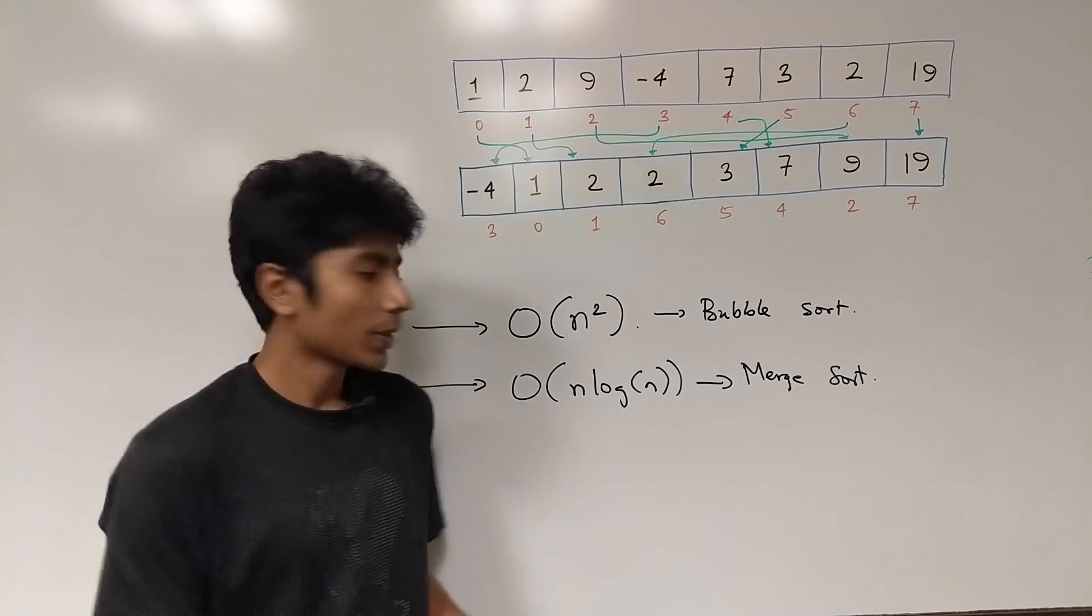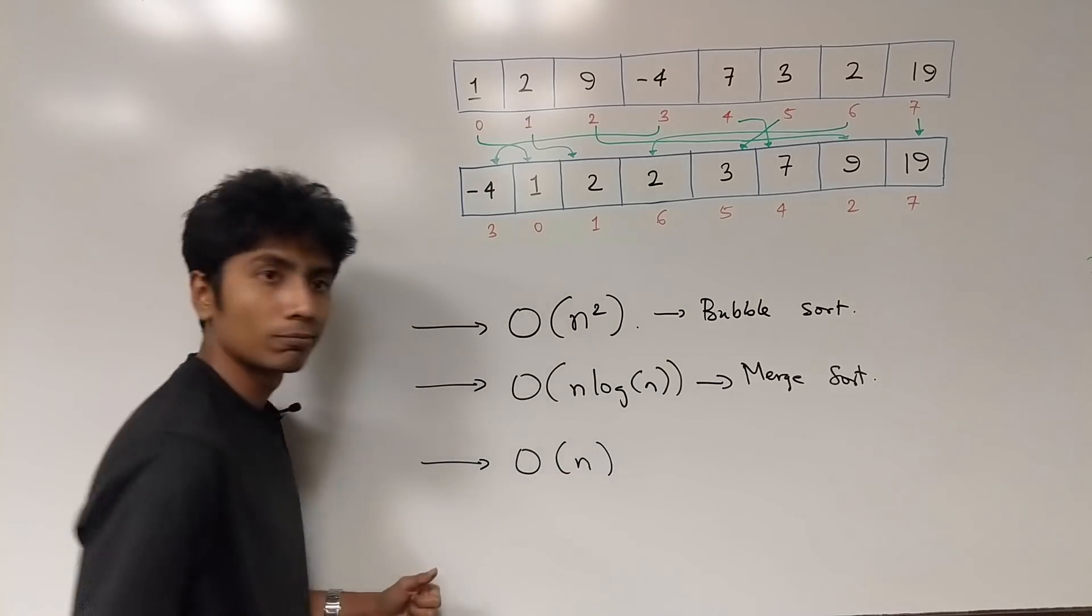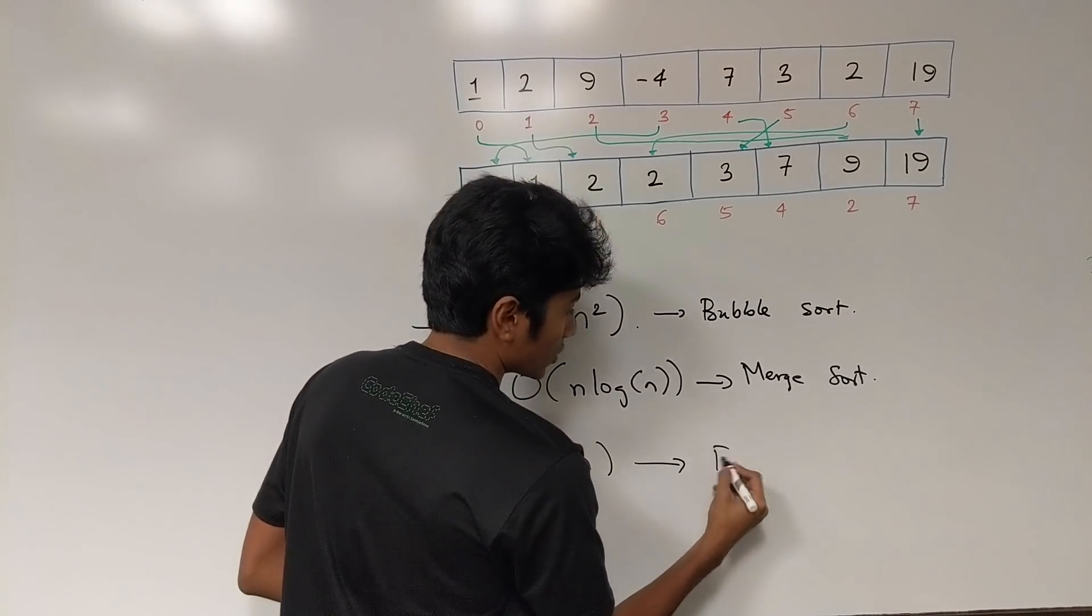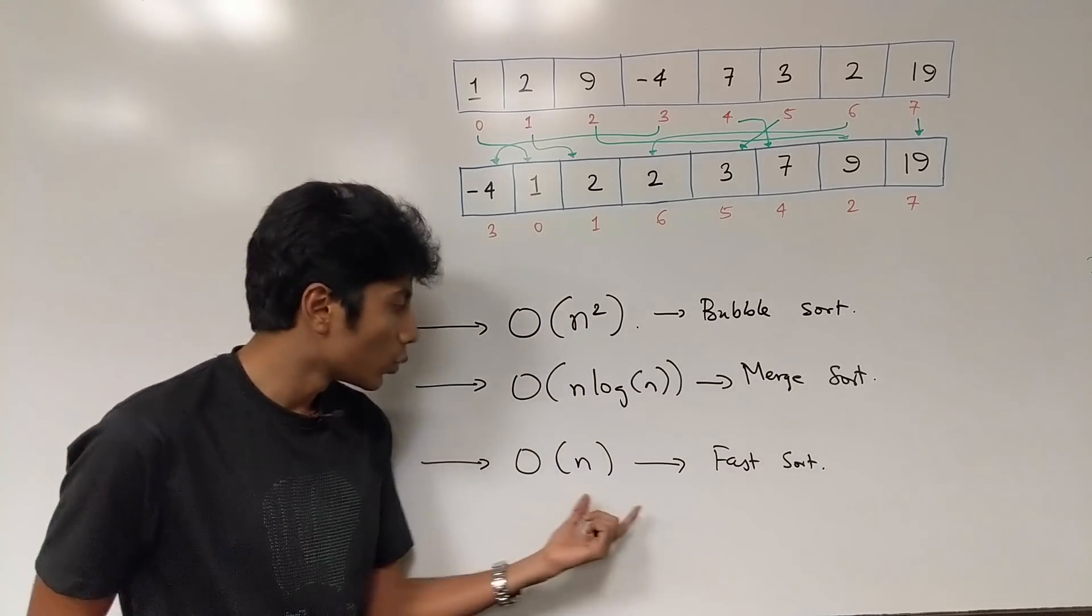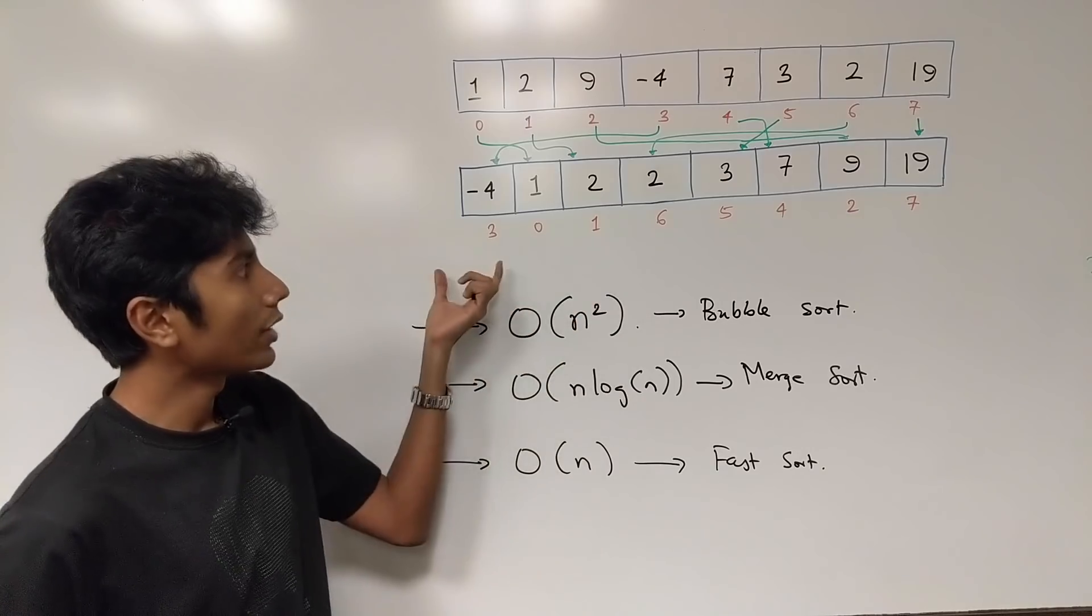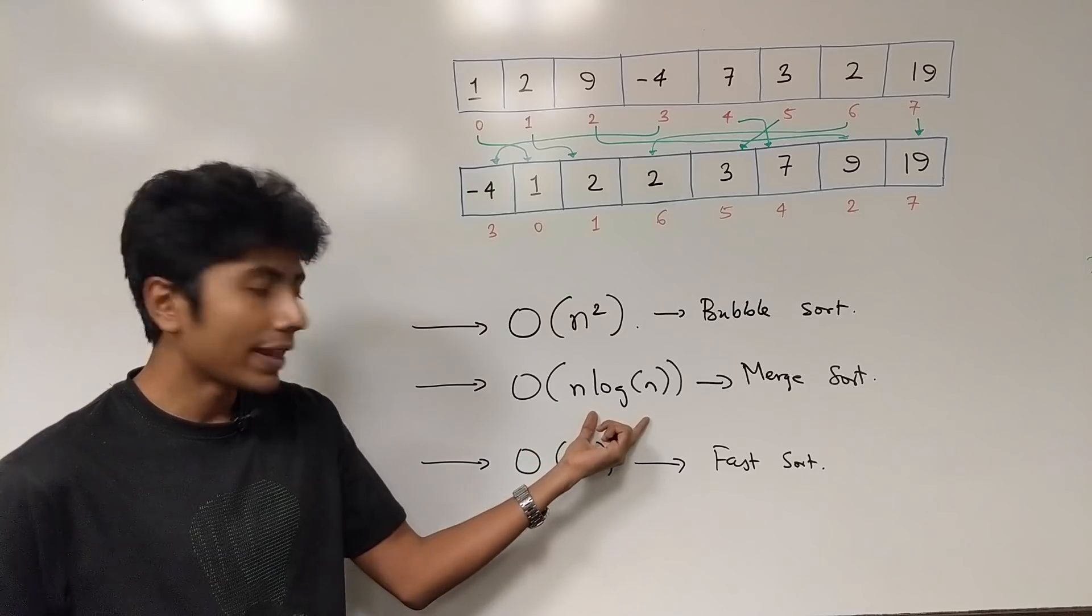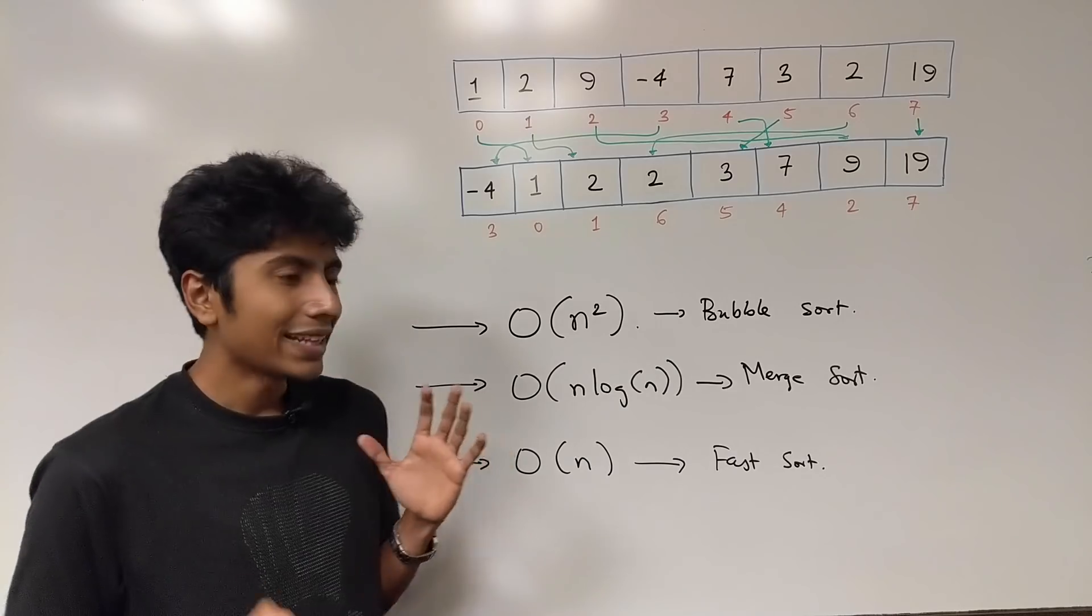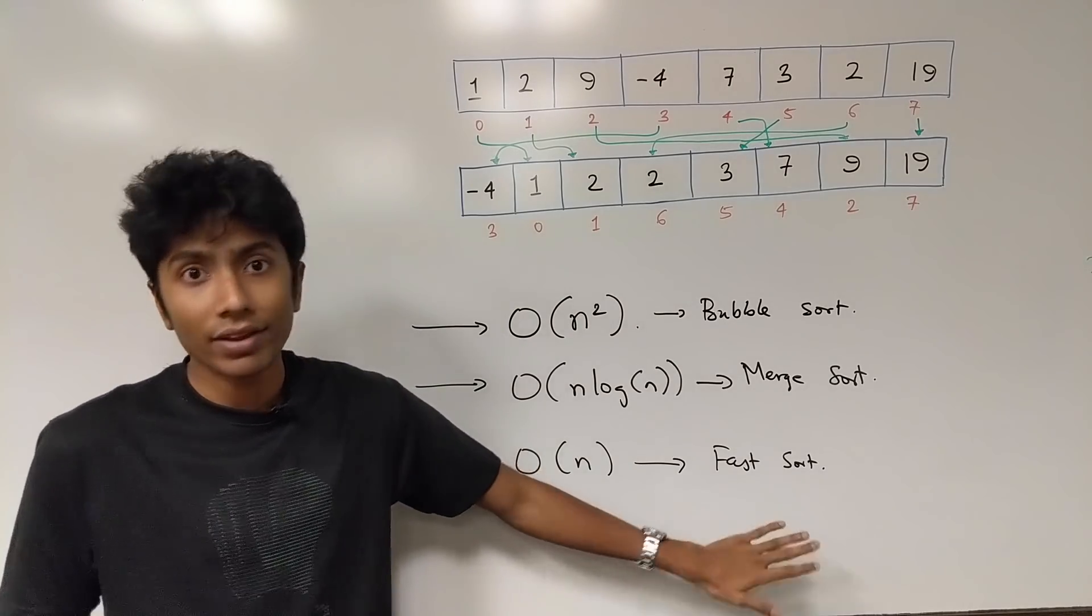Now our challenge today is to try to bring down sorting to order n and the sorting algorithm for this is going to be called fast sort. Fast sort is an algorithm which converts an input sequence of size n to an ordered sequence in just order n time. n log n is much slower than order n when you think of it. Let's first try to prove that there exists an algorithm fast sort and then we can try to search for it.